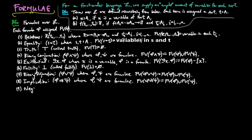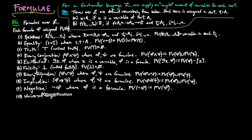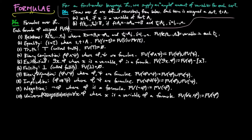Nine, negation: the negation of phi, where phi is a formula, and the free variables of the negation of phi is equal to the free variables of phi. Ten, universal quantification: for all X, phi, where X is a variable and phi is a formula, and the free variables of (∀X. phi) is equal to the free variables of phi with the variable X removed.